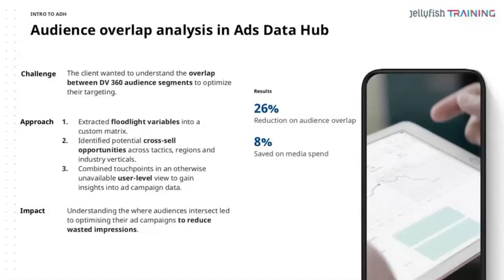What we helped them do was extract the floodlight variables that made up the audiences — the differences in audiences like recency and the content the audience was looking at — into a matrix so we could see the attributes. This helped identify potential cross-sell opportunities across the audiences. The value add of doing this in Ads Data Hub was user-level insight, because we were able to look at a common identifier. The impact was the ability to understand where audiences intersect and reduce wasted campaign impressions — with the same media budget, we saved on media spend.